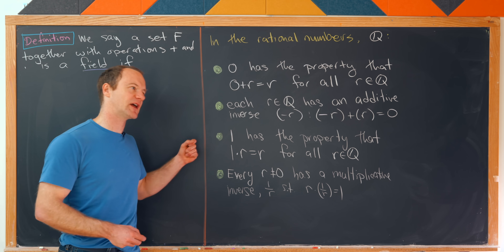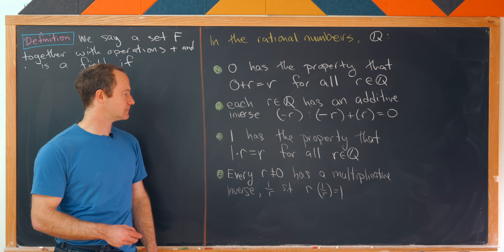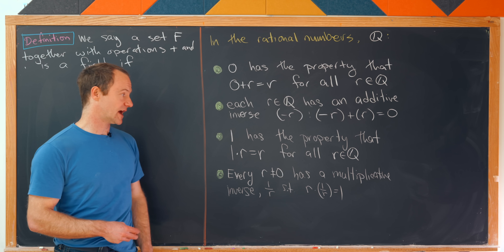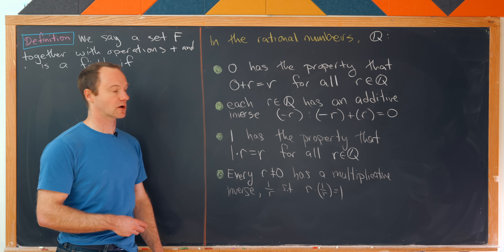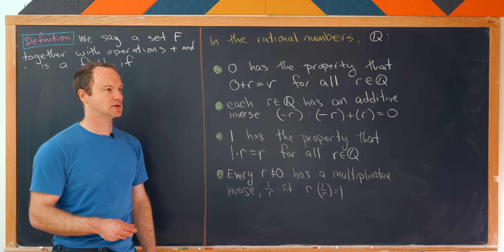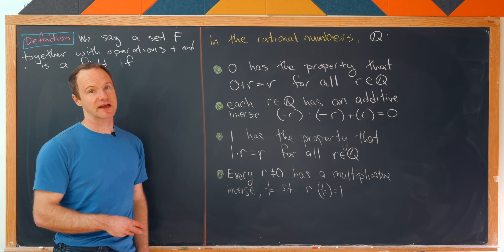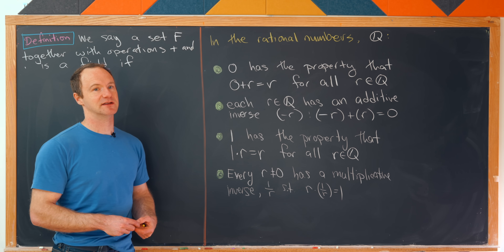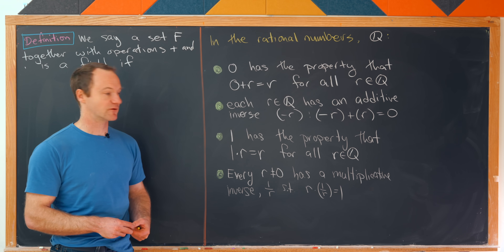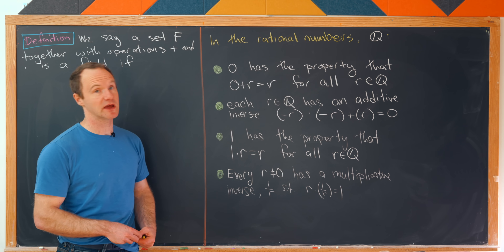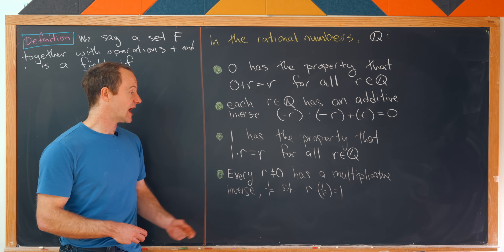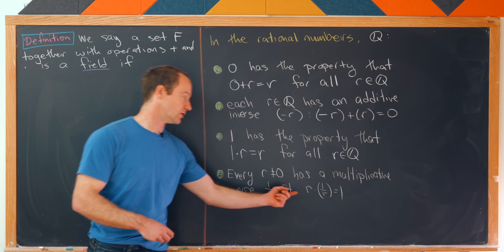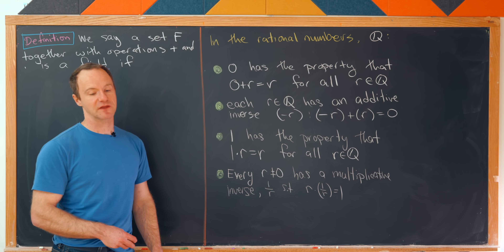We really want to think about that as a path back to the additive identity. Then there's also this very special number called one, and one has the property that one times r is equal to r for all rational numbers. So that's like the multiplicative identity. And then most numbers have a path back to the multiplicative identity via a multiplicative inverse. In fact everything except for zero in the rational numbers has a multiplicative inverse, which is just its reciprocal.